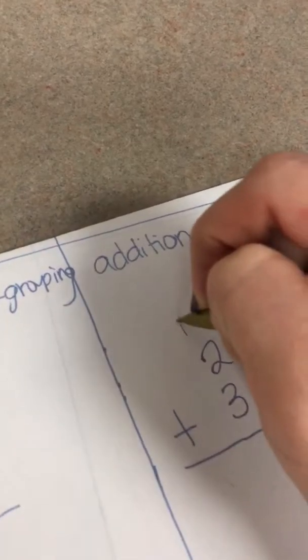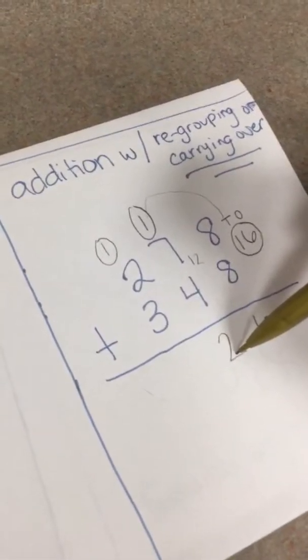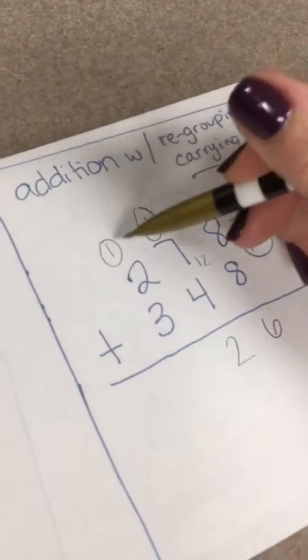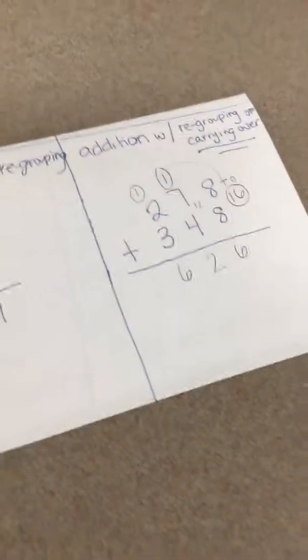And then you bring that one over. You have to carry that one over because ten or more, carry next door. So the fact that seven plus four was twelve, we needed to make sure that we carried that one over. One plus two is three, and three plus this three is six. I hope you found these videos great, thank y'all.